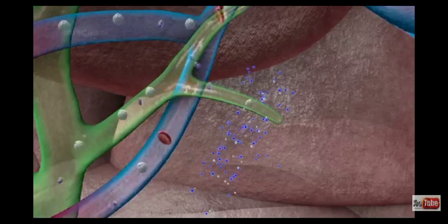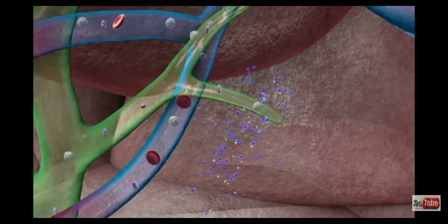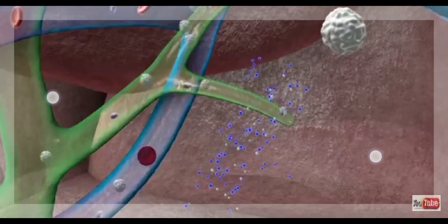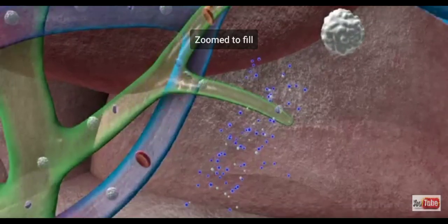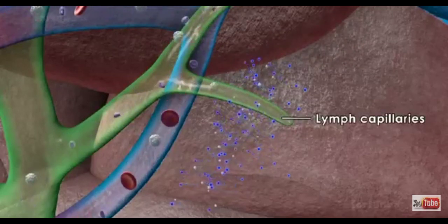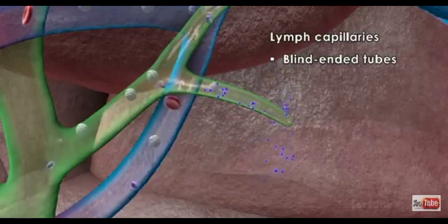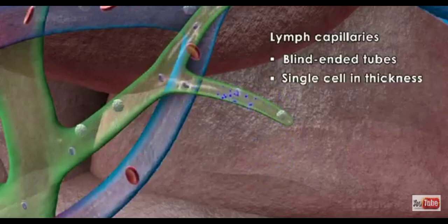However, a small amount will not return to the blood capillary system. This part is a clear fluid containing white blood cells and is known as lymph. It will enter the lymph capillaries, which begin as blind-ended tubes that are no more than a single cell in thickness.